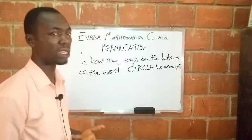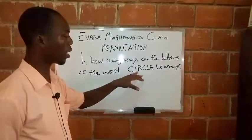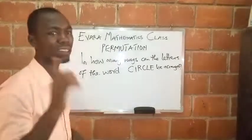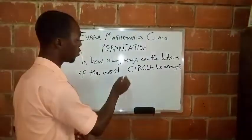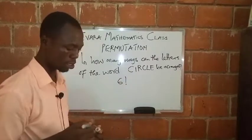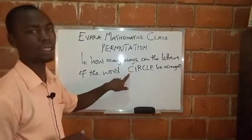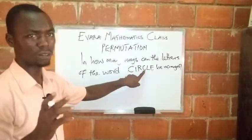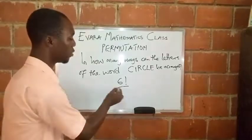Now this is C-I-R-C-L-E. That means there are six letters in the word circle, so that would be six factorial. Normally supposed to be six factorial, but because we have a letter that appeared twice, that is C and C, so that C that appeared twice will now make us divide this six factorial by two factorial.